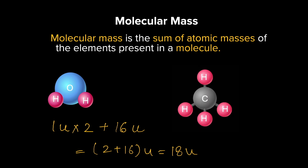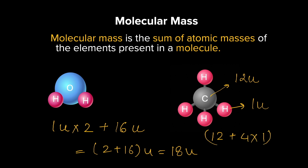Now try methane (CH₄) on your own. For carbon, the atomic mass is 12 u, and for hydrogen it is 1 u. Note that instead of using the precise values of 12.011 u for carbon and 1.008 u for hydrogen, we approximate them as 12 u and 1 u respectively for ease of calculation. So the molecular mass of CH₄ = 12 + (4 × 1) = 16 u.